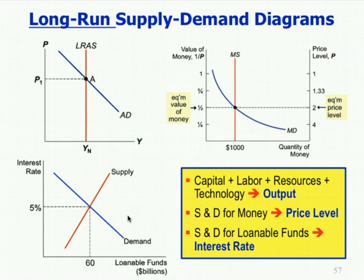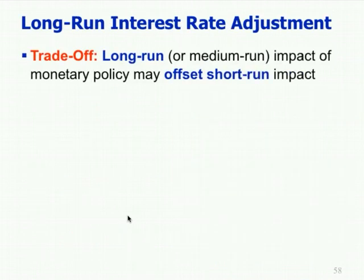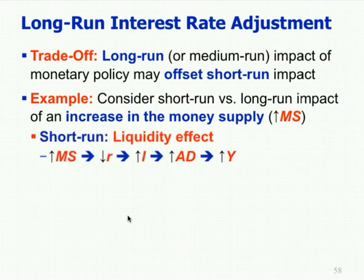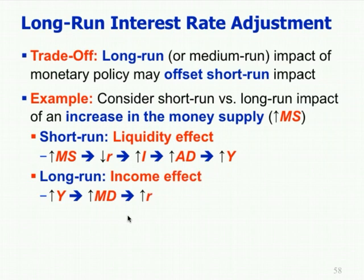How do we put this together? There are effects that work in opposite directions. Whereas the Fed tries to influence the interest rate to affect aggregate demand in the short run, the long run or medium run impact of monetary policy may actually offset the short run impact — generally it does, it's just a time lag. Consider the short run versus long run impact of an increase in the money supply. In the short run, the liquidity effect: increase money supply, lowers interest rate, increases investment, increases aggregate demand, increases real output in the short run. But in the long run, the income effect: if you increase real output, that increases income, which increases money demand, which raises the interest rate — partially offsetting the initial decline.